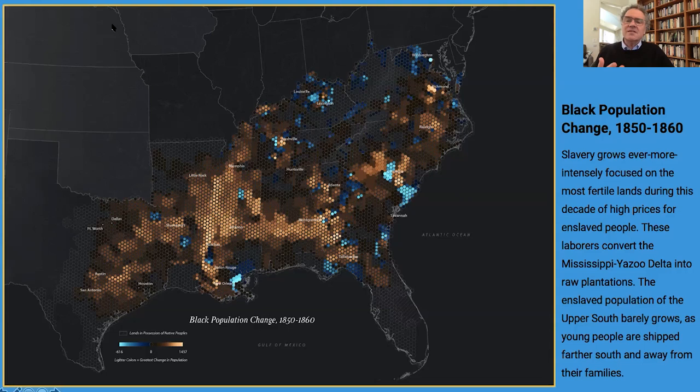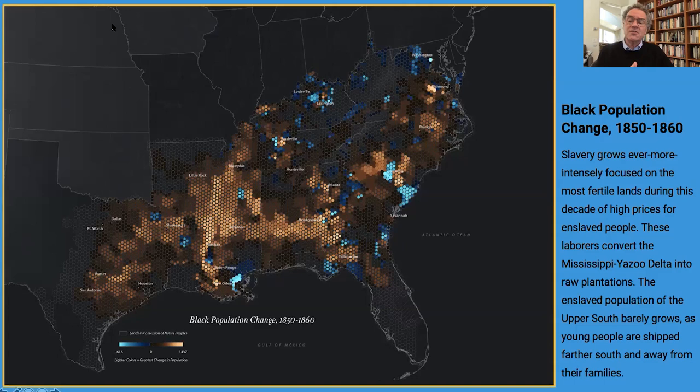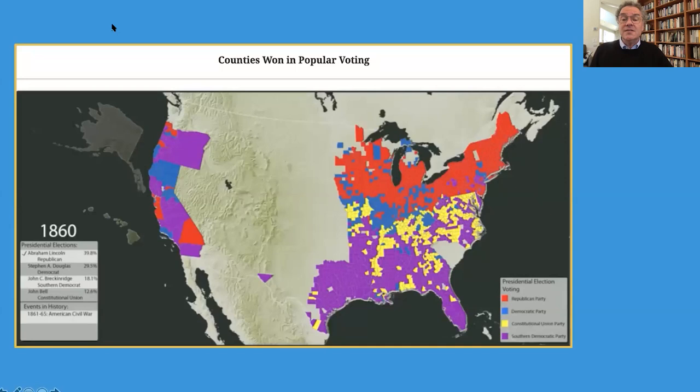By 1860, cotton prices had never been higher. Prices for enslaved people had never been higher. The slave South believed it could, should, and must have the untrammeled right to keep expanding — maybe into Cuba, maybe farther west, maybe into other parts of Latin America — and it could not be hedged in by northern efforts to stop it.